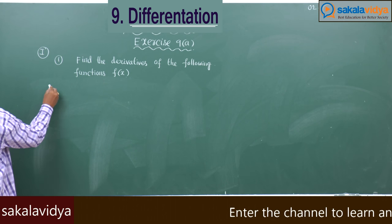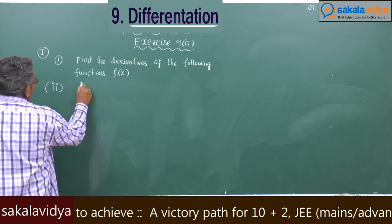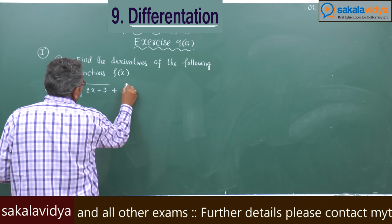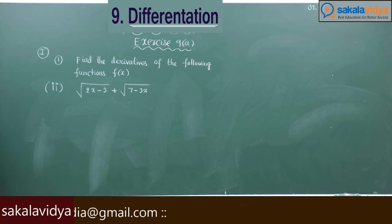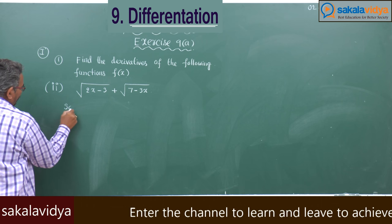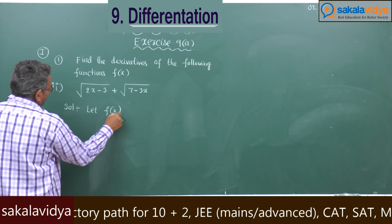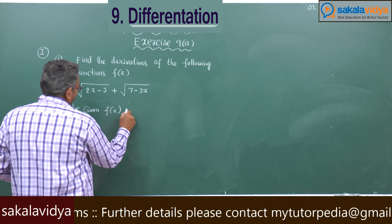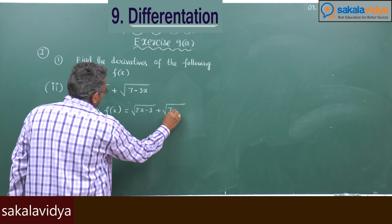Second problem. Given f(x) is equal to root of (2x minus 3) plus root of (7 minus 3x).